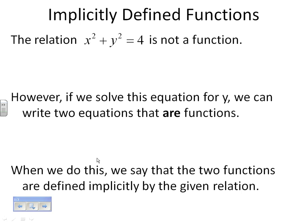So hopefully those won't be too bad. And the last thing we're going to talk about is implicitly defined functions. Okay, so we started earlier in the chapter talking about functions, and if something is not a function but still creates a relationship between x's and y's, we call that a relation. The relation x² + y² = 4 is not a function.